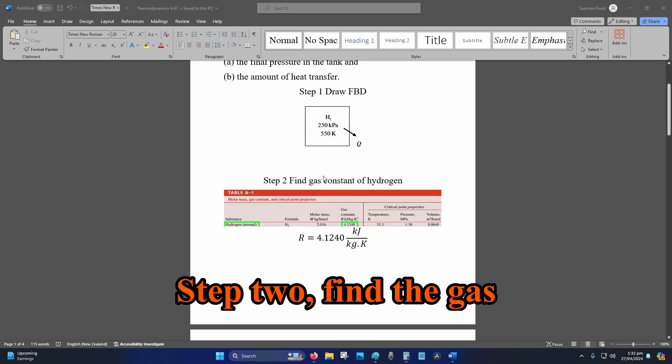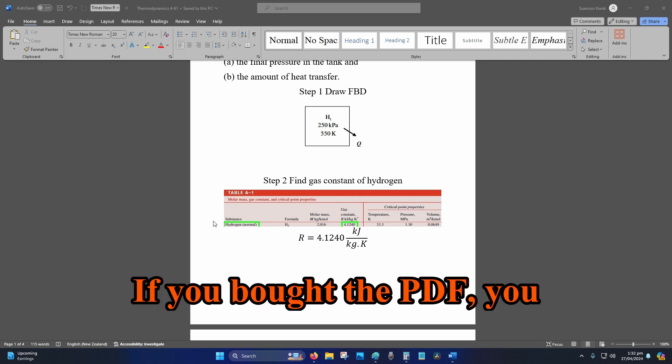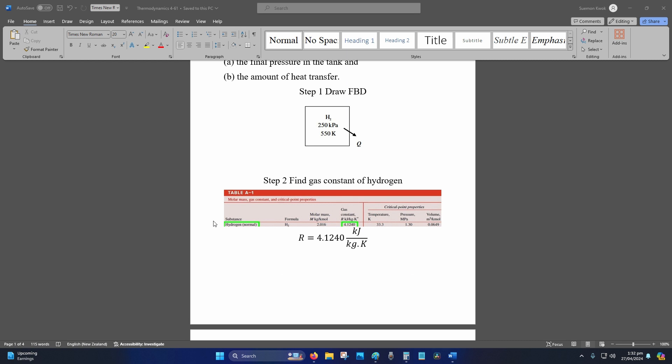Step 2, find the gas constant of hydrogen. You can find this table at the back of your textbook. If you bought the PDF, you can use your search function, CTRL-F, type in table A-1, go to your substance, hydrogen.